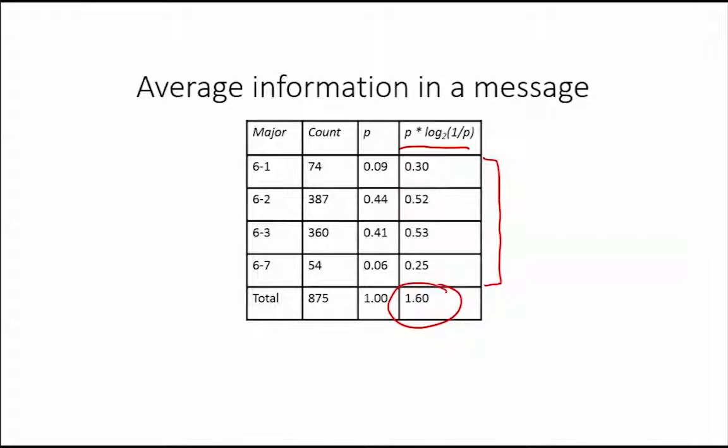We can now also calculate the average bits per major of the encodings that we have identified. This is calculated by multiplying the number of bits in each encoding times the probability of that major. Recall that our encoding for Major 6-1 was 1-1-1, for Major 6-2 it was 0, for Major 6-3 it was 1-0, and finally for Major 6-7 it was 1-1-0.